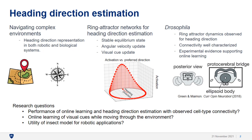Theoretical work for ring attractor networks for heading direction were originally proposed for mammals, but there has been recent exciting experimental work in the fly where ring attractor dynamics for heading direction encoding have been observed in the protocerebral bridge and the ellipsoid body. A benefit of the fly as a model system is that the detailed connectivity at the individual cell type level is stereotyped and well characterized. Furthermore, recent experimental evidence supports online learning at specific neuron types to learn the mapping of visual cues in an environment.